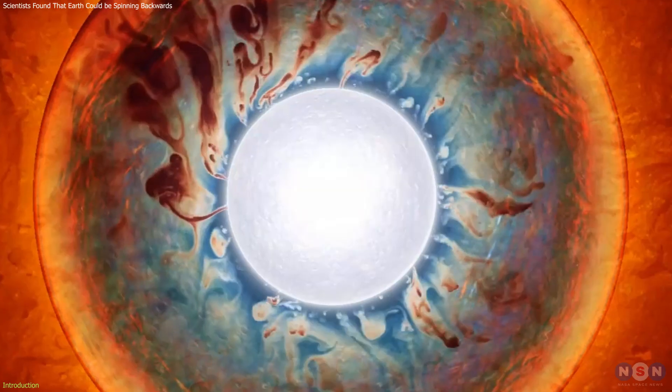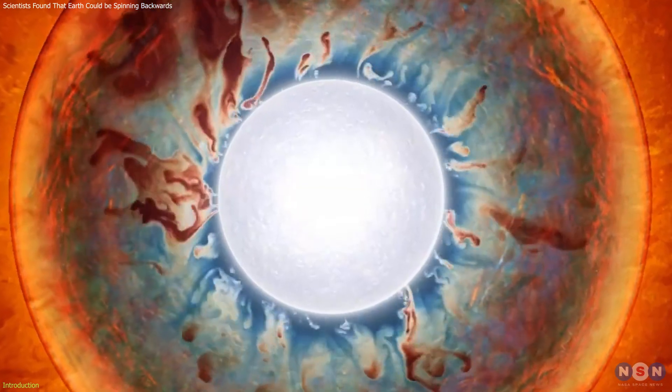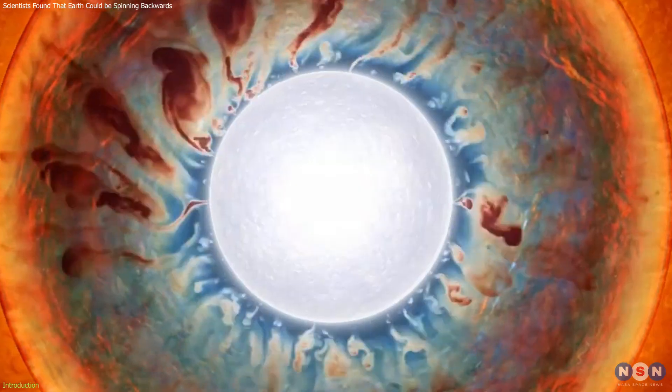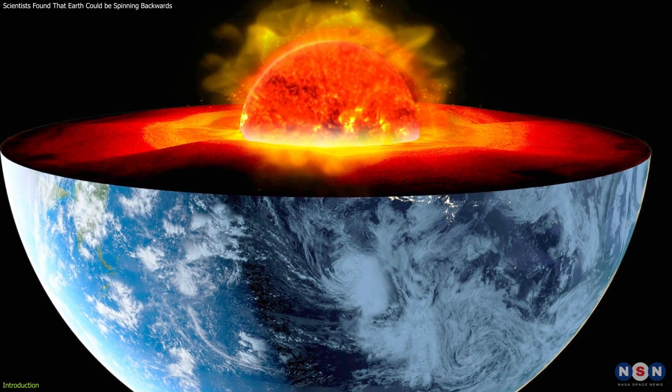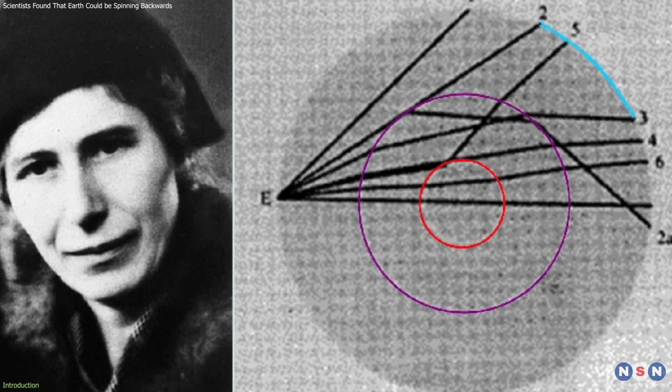Deep inside our planet, there's a moving secret: Earth's inner core. This solid ball of metal spins on its own, separate from the rest of the planet, and it has been a mystery to scientists since it was discovered in 1936.